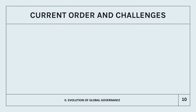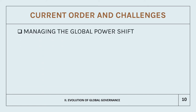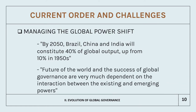What are the current order and challenges of global governance? First, we have managing the global power shift. It is said that by 2050, Brazil, China, and India will constitute 40% of global output, up from 10% in the 1950s. It is also said that the future of the world and the success of global governance are very much dependent on the interaction between existing and emerging powers.